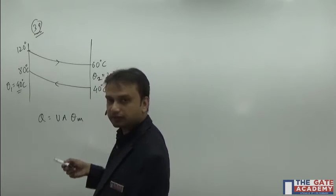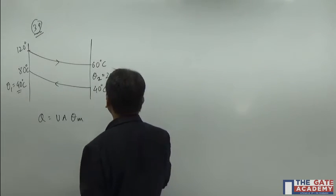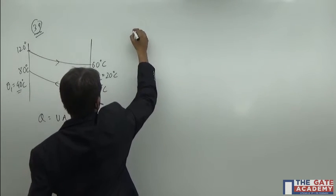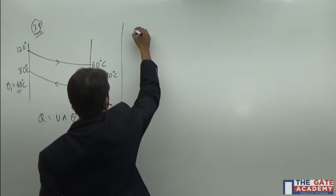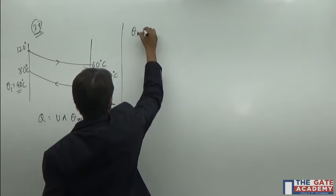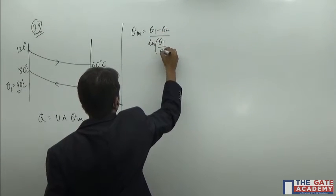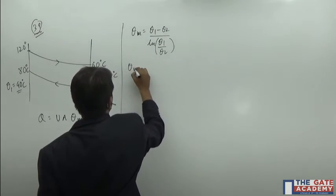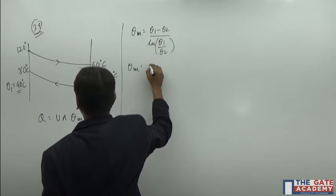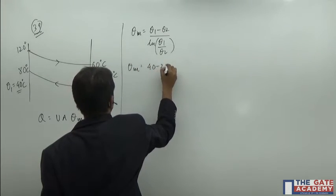Let us start with the computation of theta m, which is the simplest part. Theta m is given by theta 1 minus theta 2 divided by natural log of theta 1 divided by theta 2.